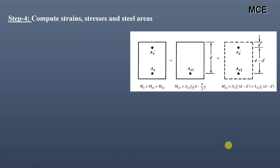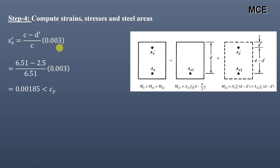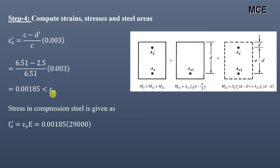Now we will compute the strains, stresses, and steel areas. Strain in the compression steel is given as (C minus D') divided by C times 0.003. Putting values of C and D', we get εs' equals 0.00185, which is less than the yield strain. So the stress in the compression steel is simply strain times Young's modulus, which equals 0.00185 times 29,000, giving FS' equal to 53.65 KSI. We have now computed the stress in the compression steel.